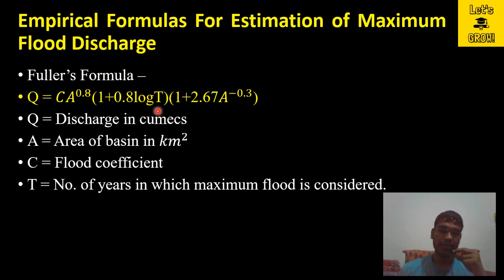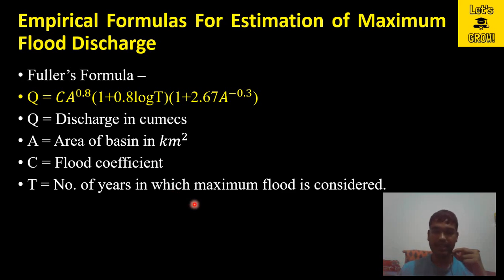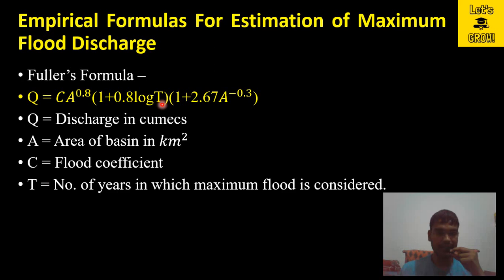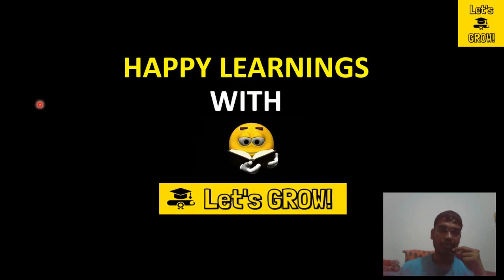To understand the use of T: suppose we have a dam, culvert, or any hydraulic structure to design, and the design period for this structure is 50 years. We want to see what maximum flood will approach this structure in the upcoming 50 years. For this we take T as 50 years, and based upon this formula we can compute the value of Q.